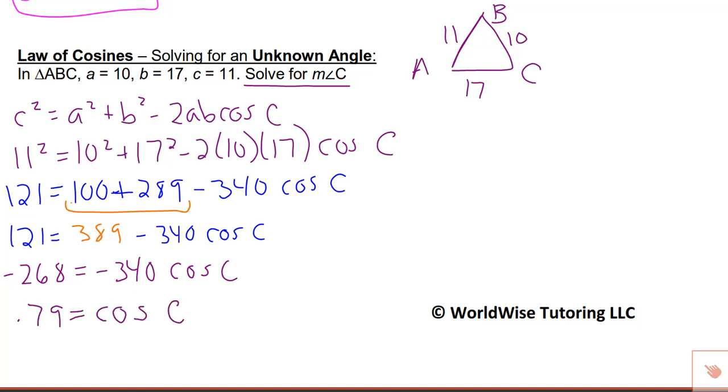They're not asking us for cosine of C. They want just C. So we're going to inverse cosine both sides. I'm going to inverse cosine the 0.79 and inverse cosine of cosine just leaves me with the angle C. When I plug that in, I get a pretty long decimal. So to round this, I'm just going to round to 38.